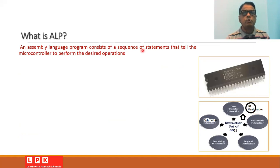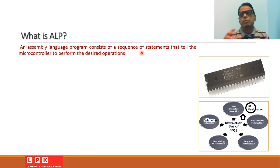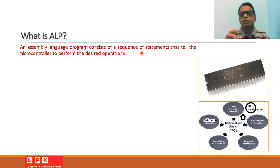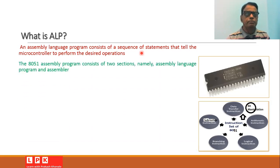An assembly language program consists of a sequence of statements, and these statements are sequentially executed one after the other. There is a purpose for every assembly language program so that we can get some operation to be done by the microcontroller unit.